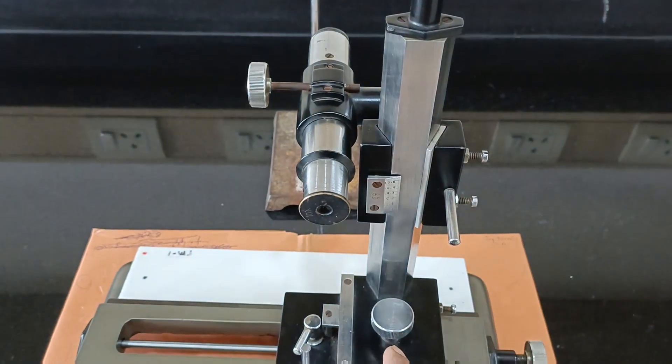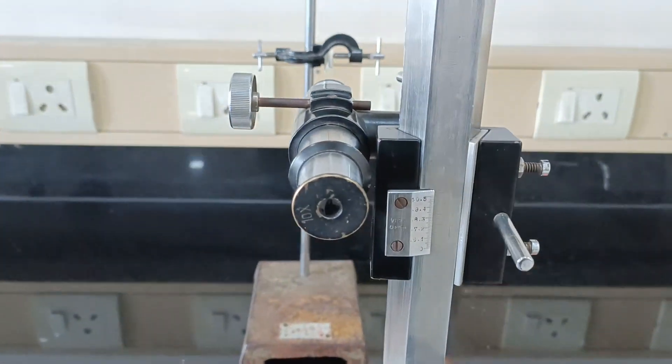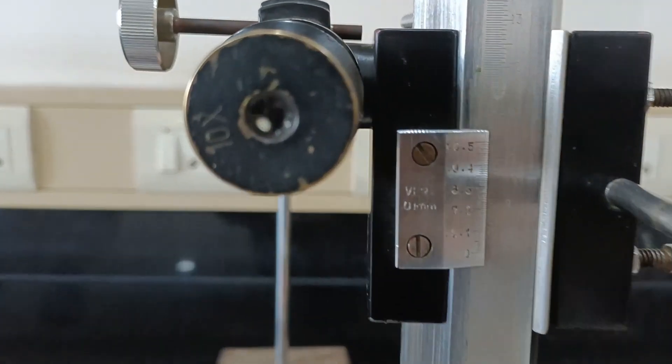By moving these two knobs by trial and error method, try to get the visual of the capillary tube. Adjust the capillary circular bore in first quadrant of the cross wire of the microscope. Take the horizontal and vertical readings on vernier attached to the microscope.